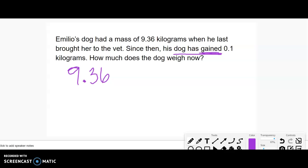The dog gained 0.1. Gaining means getting more. So we're adding weight onto the dog. Either I can think, I have 3 tenths adding on another tenth. So I'm going to get 9.46.